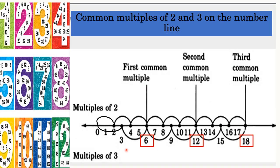Now to find the common multiples, what we are observing in the number line children is that both the multiples of 2 and multiples of 3 coincide — they are intersecting at a fixed point. So at 6 both arrows are connecting. The next connecting point is 12 and the next is 18. So the common multiples of 2 and 3 are 6, 12, 18 and so on. But if we want only the first two common multiples, the answer is 6 and 12.